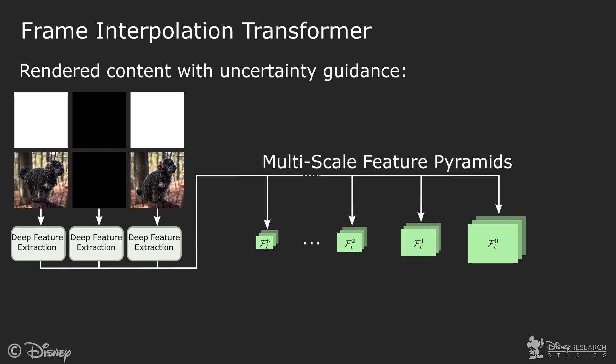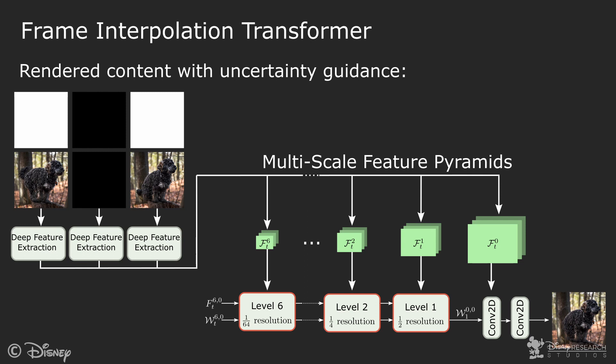We process the resulting multiscale feature pyramids in a bottom-up manner through multiple levels of our transformer-based network. At the top level, we pass the features of the target frame through convolutional layers to get the final interpolation.